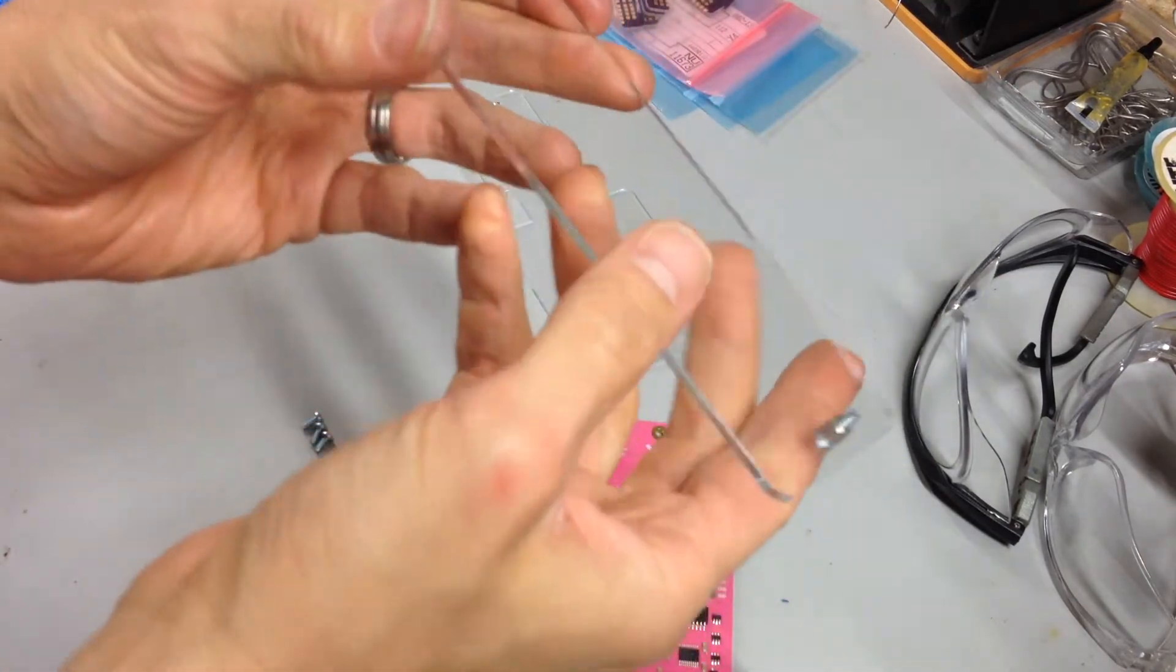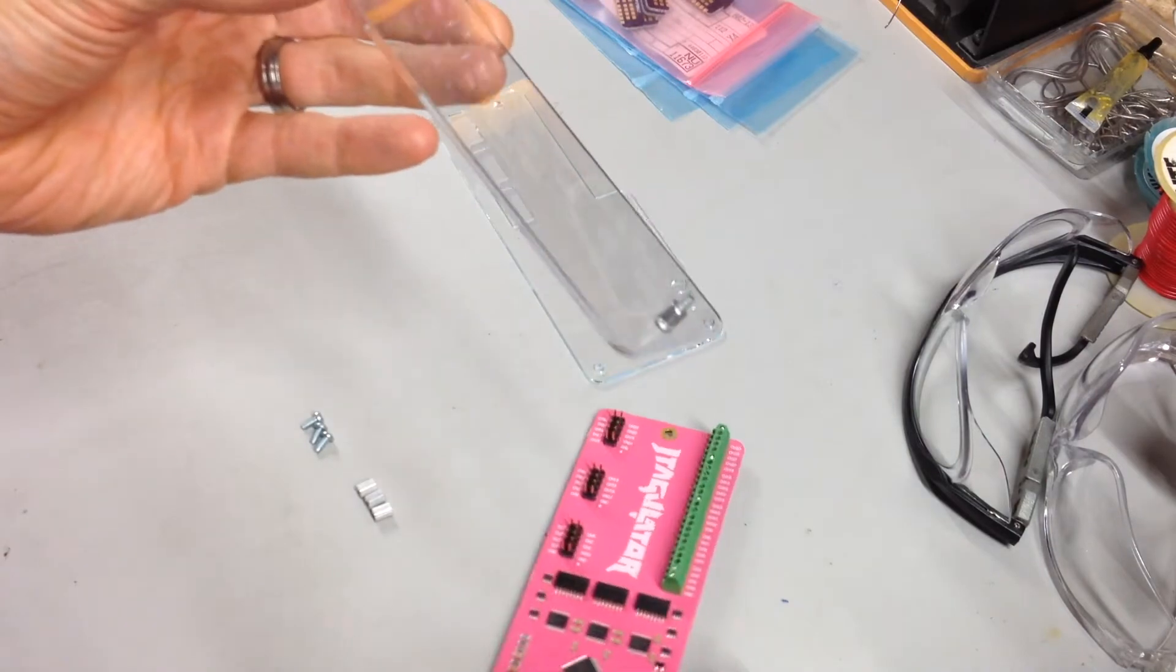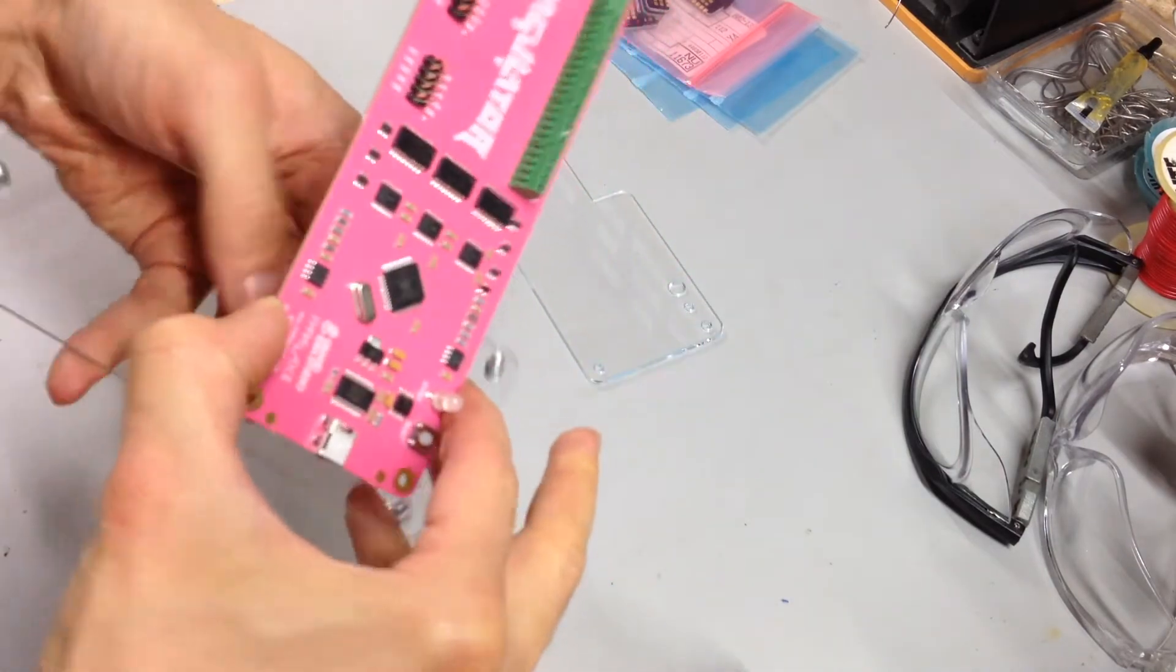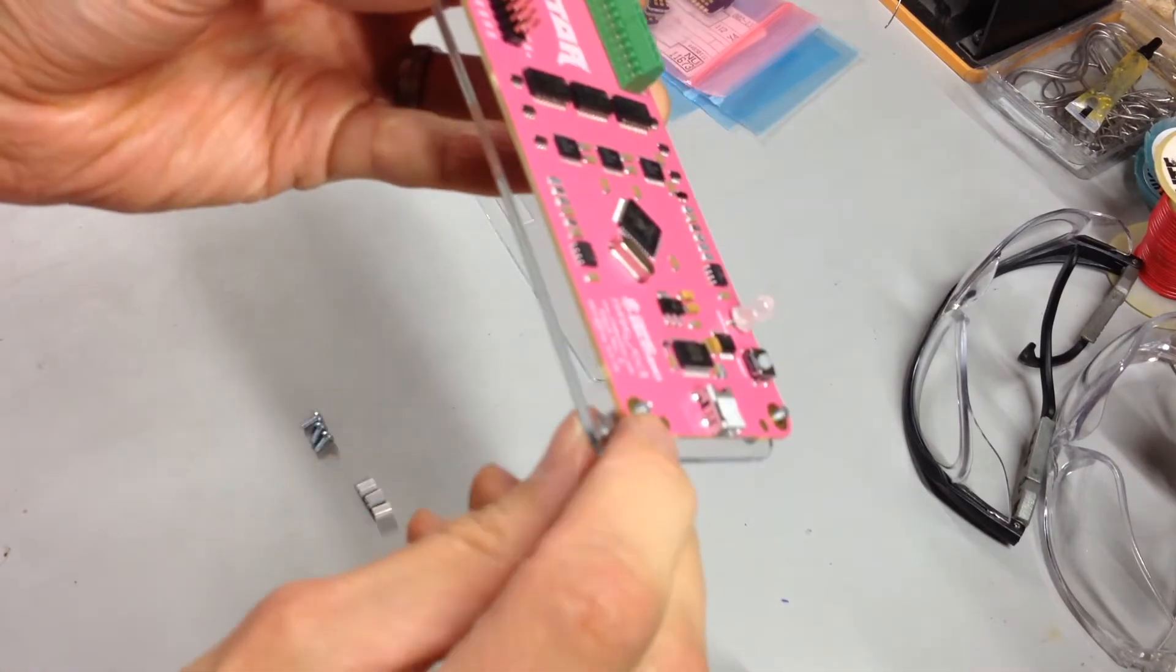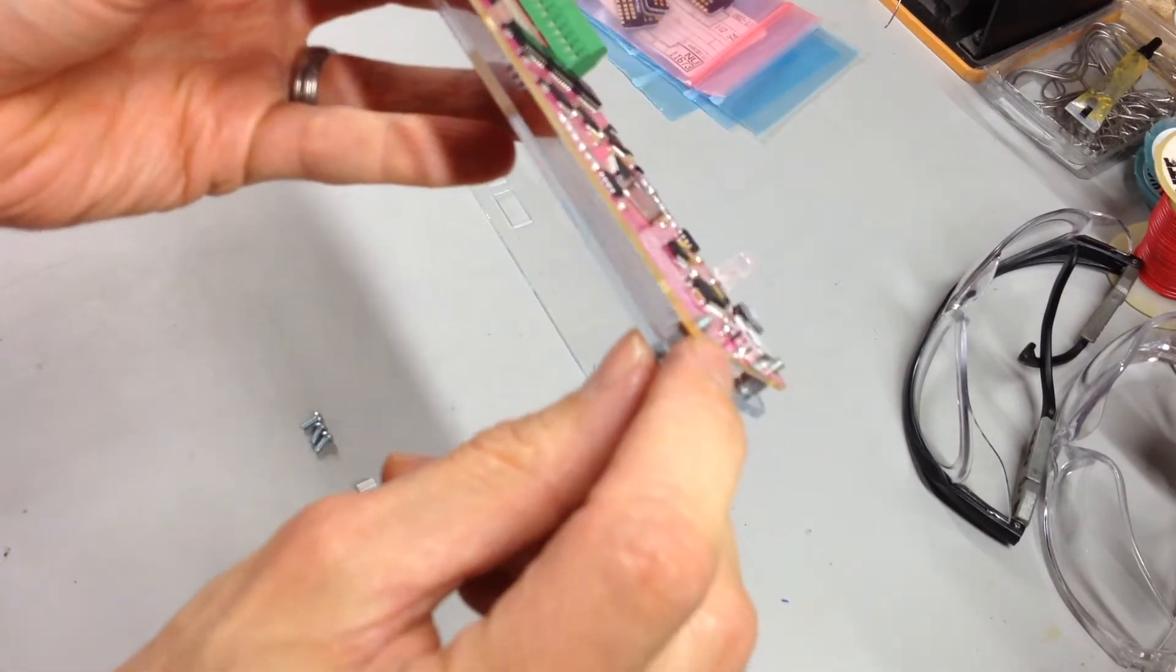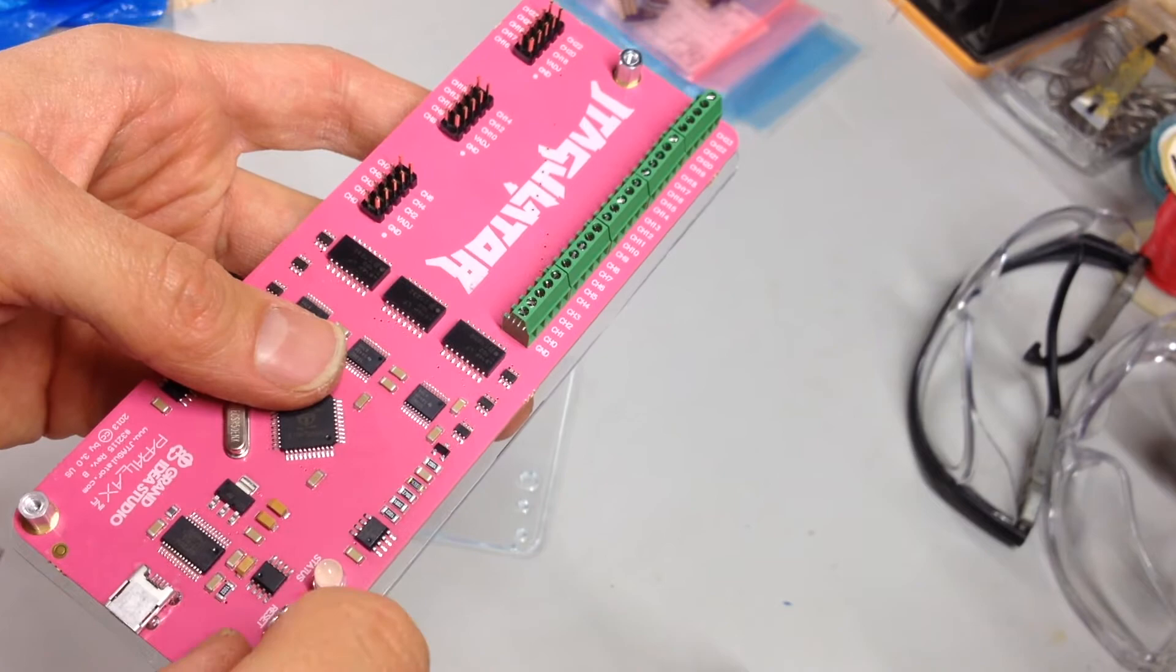So once we have this, this now becomes our base for the actual JTagulator. So this sits right down on top. The screws are long enough that we can now put another standoff on top.